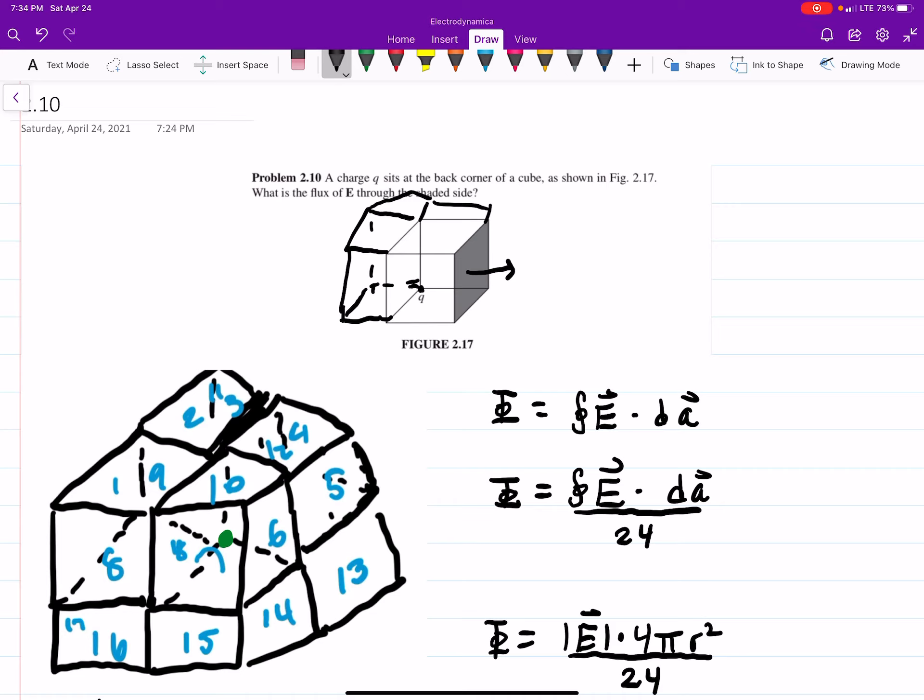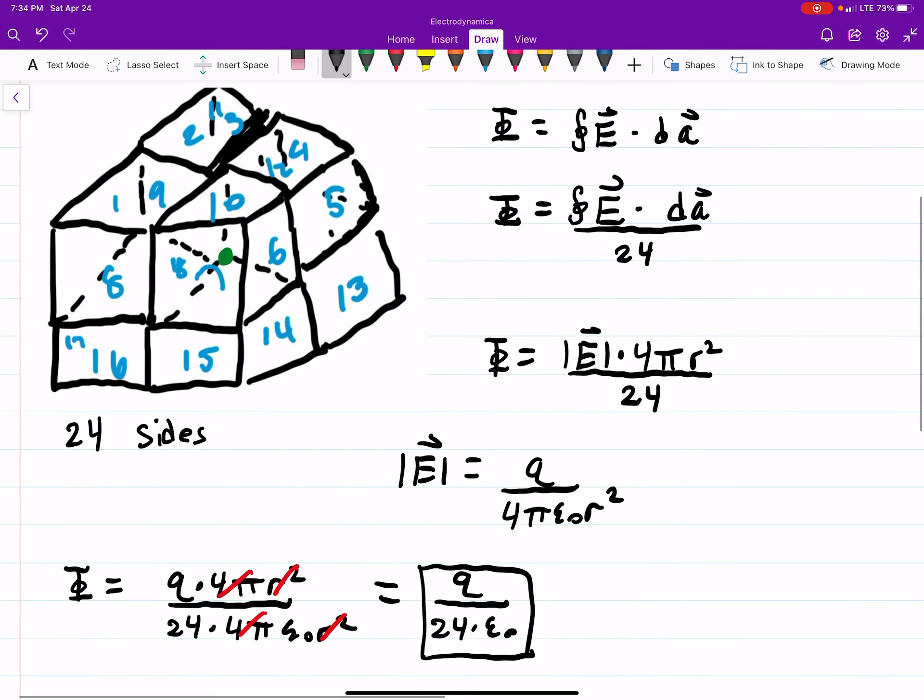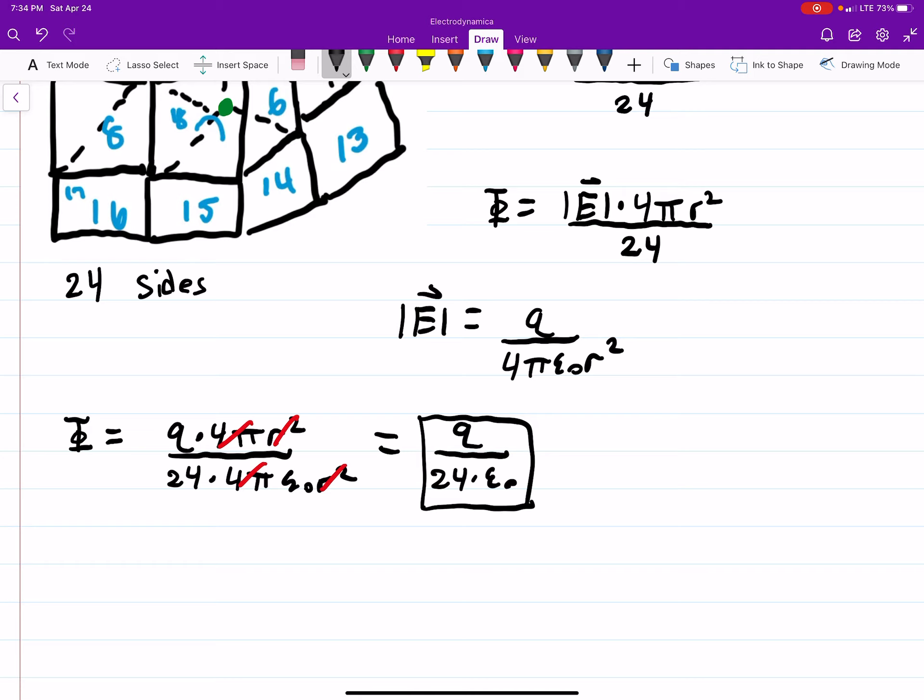And then from there, we could find the flux that would go through any one of those sides, including the real side that we're interested in. And we can use our flux equation, divide by the amount of sides we have, take advantage of the fact that we know what the E field of a point charge is, and then we can find the flux.